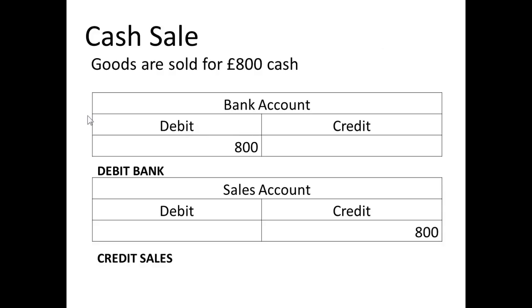Suppose we make a cash sale — we sell goods for £800 cash — obviously we're getting cash into the bank. So it's debit bank and credit the sales account.